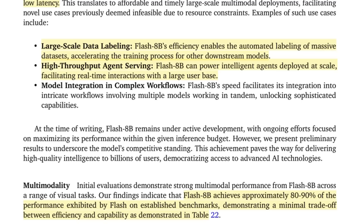Another use case I found interesting — and I should point out I've been one of the people testing this model — is the high-throughput agent serving idea. When you want agents to do lots of calls really quickly, to break something down, check it out, do a whole bunch of different calls — whether for summarization, simple decision making, or extracting things for an agent — this model can definitely perform a lot of the grunt work where you just don't need the most intelligent model. Then you can use a different model for specific decisions that need more intelligence.